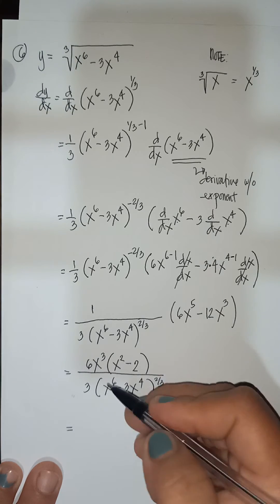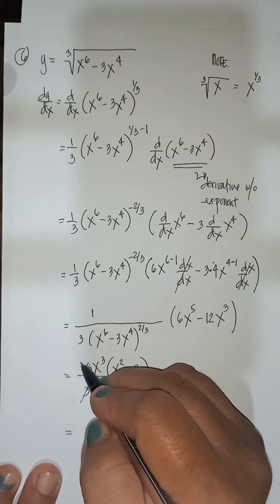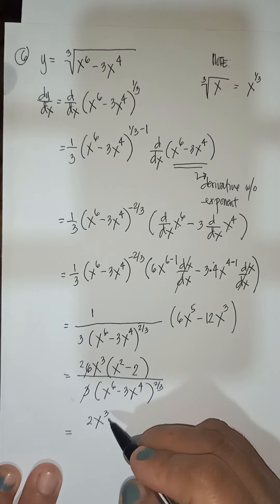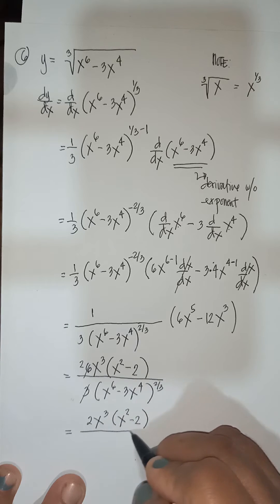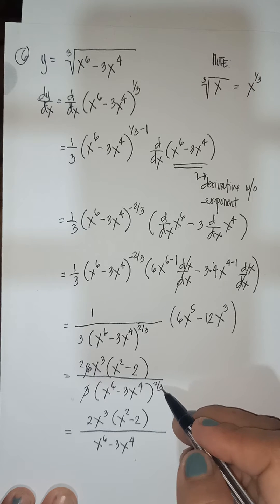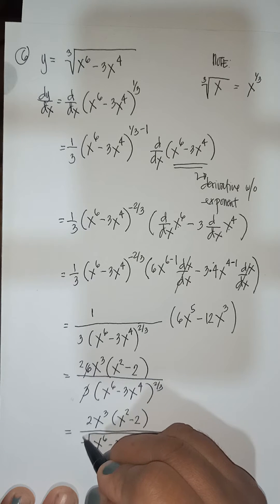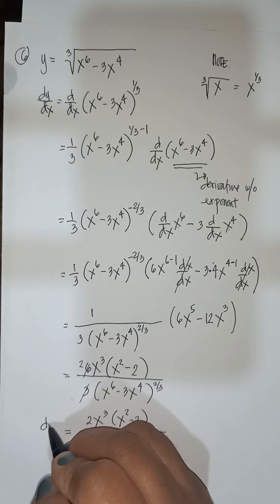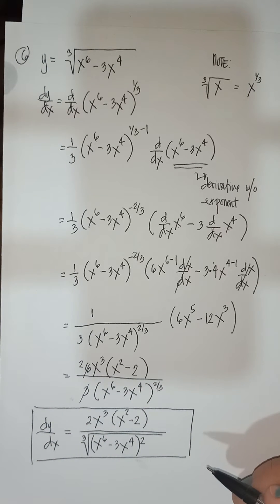So factoring 6x to the 5th minus 12x cubed: the common factor is 6x cubed, leaving x squared minus 2. Then 6 divided by 3 gives 2, so you will have 2x cubed times x squared minus 2, all over the cube root of x to the 6 minus 3x to the 4th squared. That is your dy/dx — that is your answer.